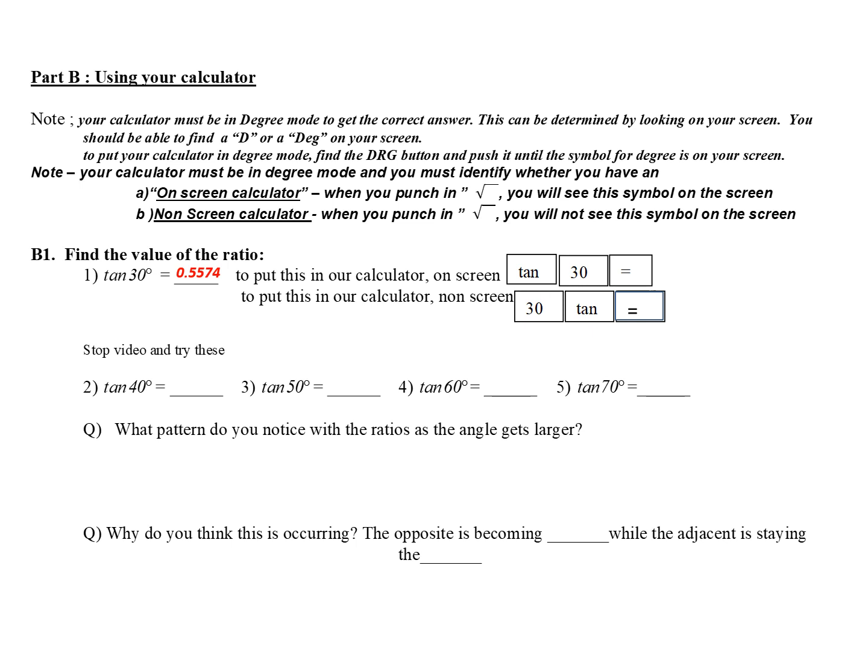So how do we punch these into our calculator? Well, let's start with tangent of 30 degrees. We're given an angle and we want to know what the ratio is. If you have an on-screen calculator, you're going to punch in tangent, 30 degrees, then equals. You should get an answer of 0.5574. If you have a non-screen, you have to follow the opposite order. You would punch in 30, tangent, equals.